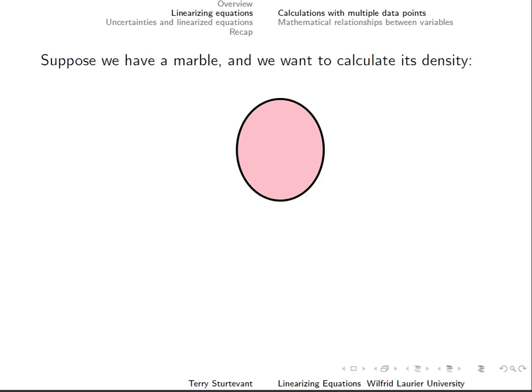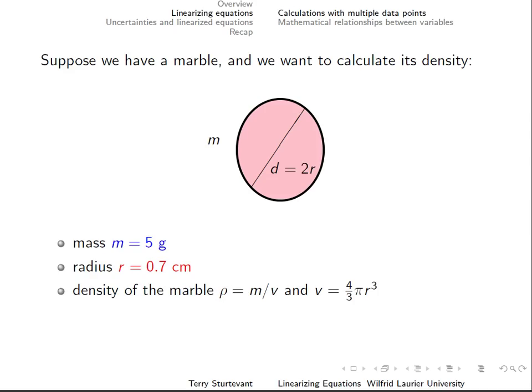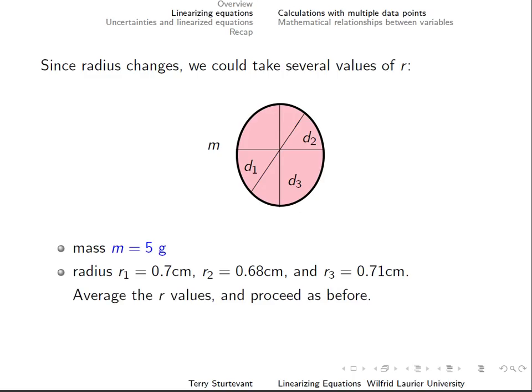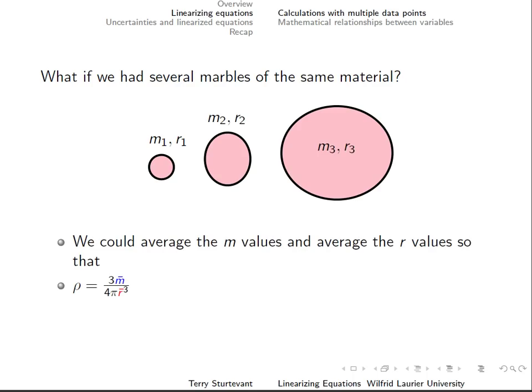Suppose we want to calculate the density of a marble. We need the mass and the radius. If the radius varies, we could measure it in several places and use the average. If we had several marbles of the same material, we could average both mass and radius to calculate density, but this would make the big marble dominate the result.